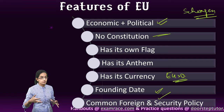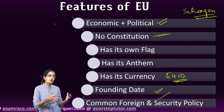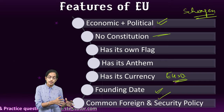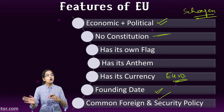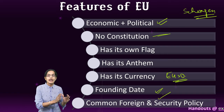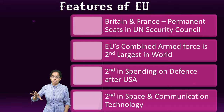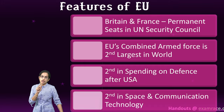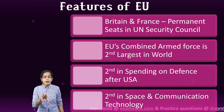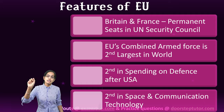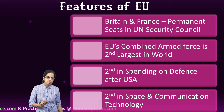If we talk about some of the nations from the European Union, Britain and France are important because they are part of the European nations' Security Council with permanent seats. There are also several non-permanent members that are part of the United Nations Security Council. The combined armed force of the European Union is the second largest in the world. The spending on defense is second largest after the United States, and it is also second largest in terms of space and communication technology.